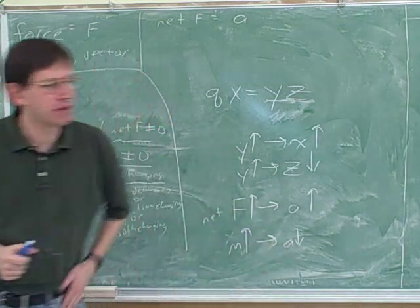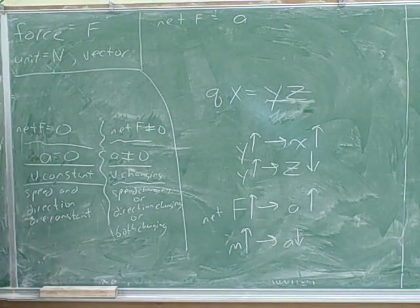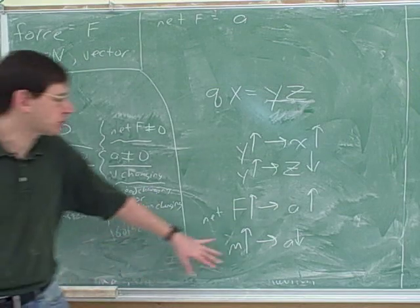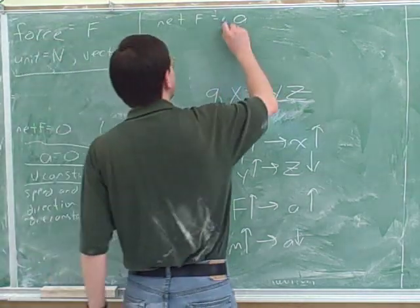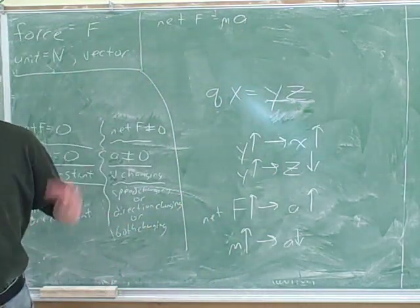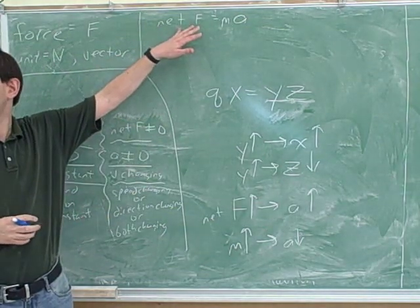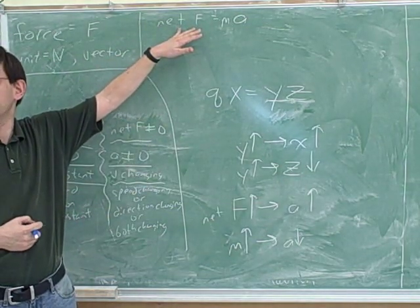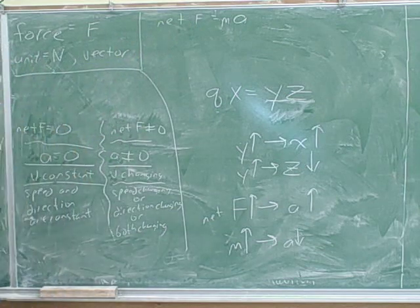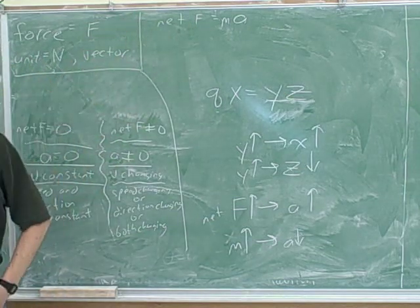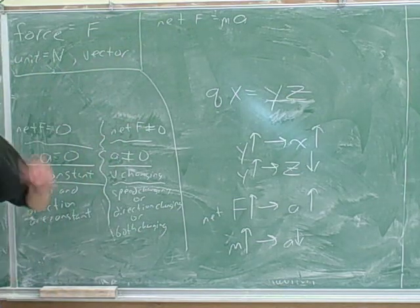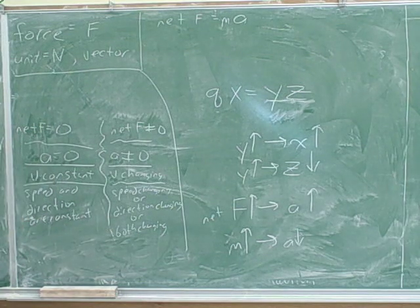All right. So should mass and acceleration be on the same side of the equation or opposite? Same. Same side to show that they're inversely related. So this is an equation you should have seen in class. But I'm just trying to show that in a way this is just common sense. This is telling us which of these variables are directly and indirectly related. There's a name for this equation. Newton's second law. This is Newton's second law. That's right. This is Newton's second law.